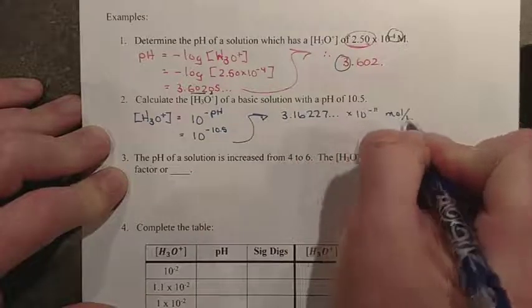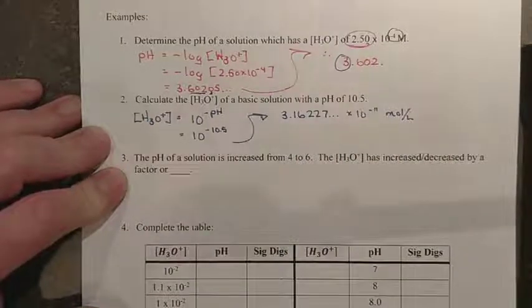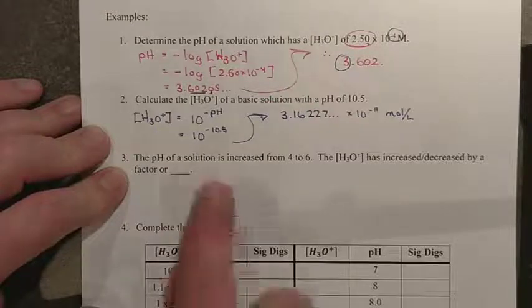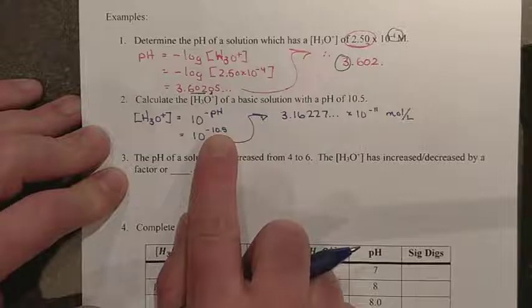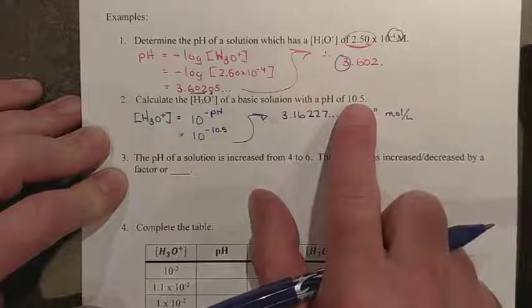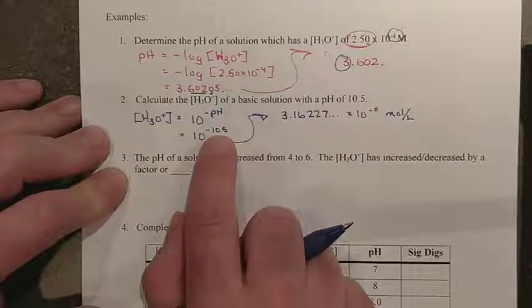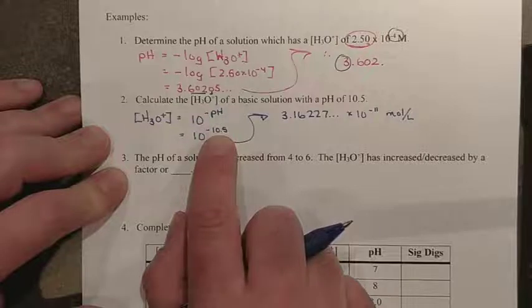And remember, this tells us the mole per liter concentration. Now, our sig digs. Remember that in any sort of pH or pOH number, like 10.5 here, only numbers after the decimal place are significant.